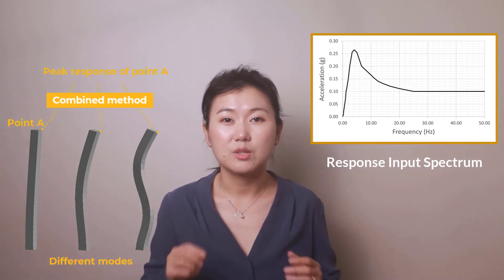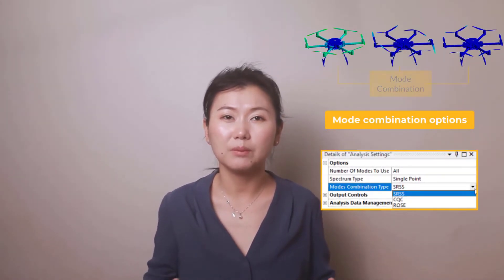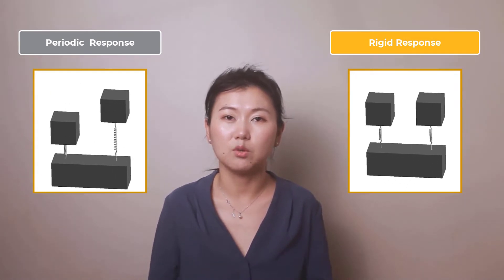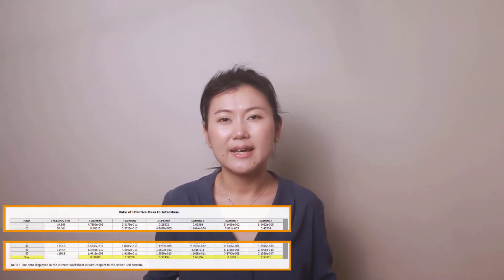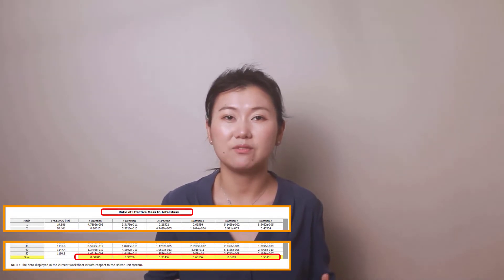For response spectrum analysis, it's important to select the proper mode combination method, as this can affect the prediction of the peak response. Understanding the difference between periodic and rigid responses helps us to properly combine the modes together. Additionally, in the case that we do not have sufficient effective mass extracted from the modal analysis, we may need to account for the contribution of the missing mass.